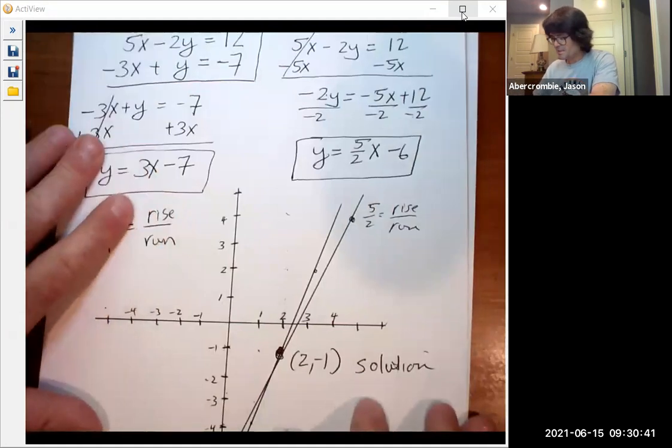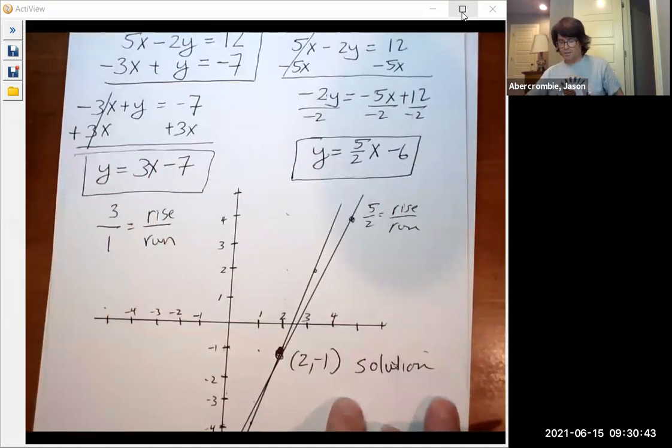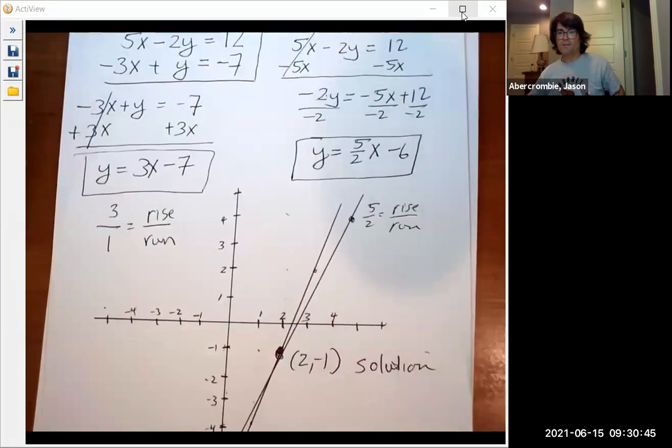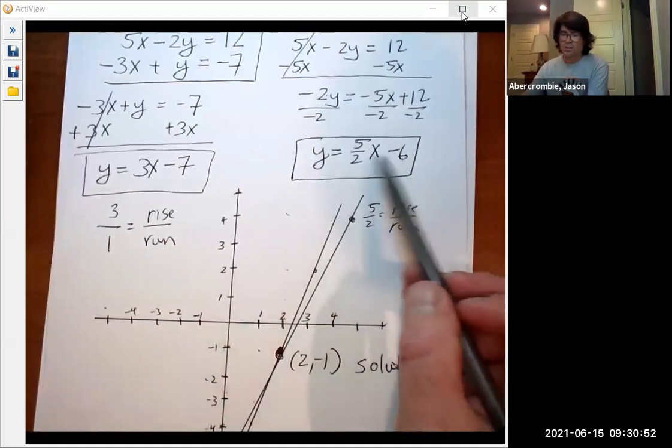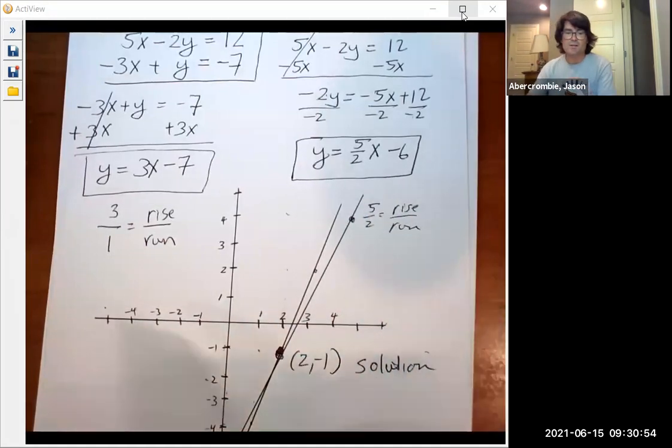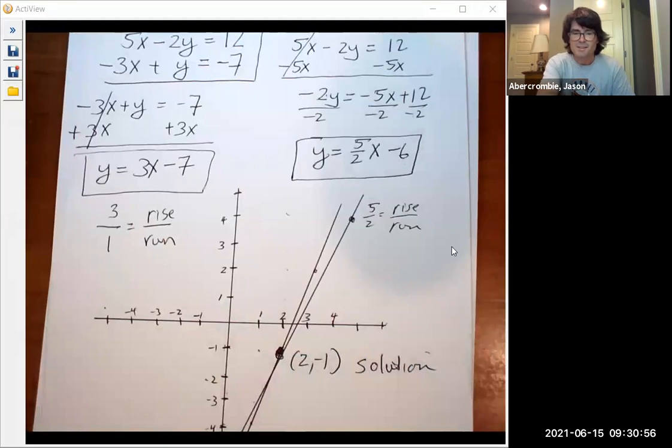So the steps are: get these in a format that you're comfortable with graphing, then put in your y-intercept and your slope, graphing both, and see where these intersect. I hope this helps you. See you next time.